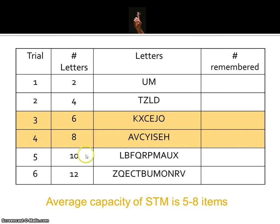If you were able to remember more letters, perhaps in trial five or even all twelve letters in trial six, perhaps it's because you were able to utilise some control processes such as rehearsal, or perhaps you were able to chunk the letters into more meaningful categories. For example, some people look at the last set of twelve letters as Z-Q-E-C-T, bum, on, RV — making little chunks of these letters. So instead of seven individual things to remember, it narrows down to three chunks: 'bum' being one, 'on' being the second, and 'RV' being the third.